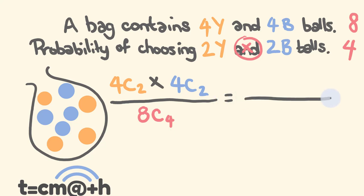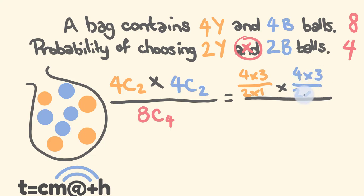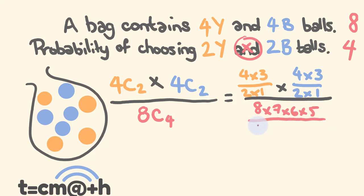Let's solve this. 4C2: four factorial coming out two times — 4×3 over 2×1. Multiplied by another 4C2: 4×3 over 2×1 — same thing. And this goes over 8C4: eight factorial coming out four times — 8×7×6×5 over 4 factorial, which is 4×3×2×1.